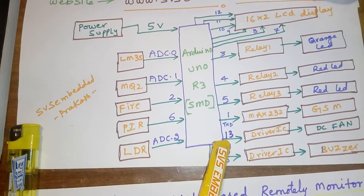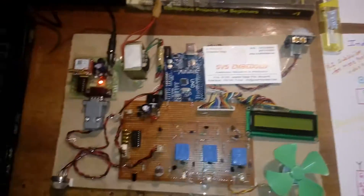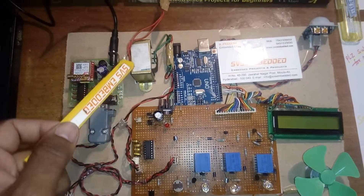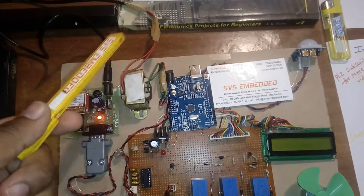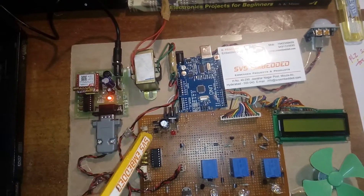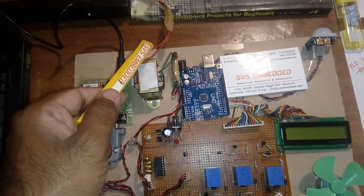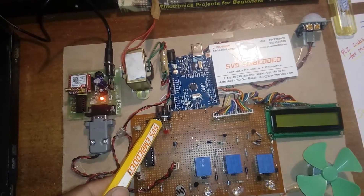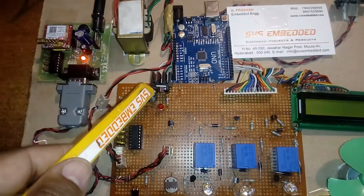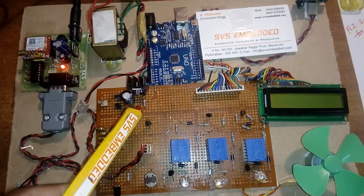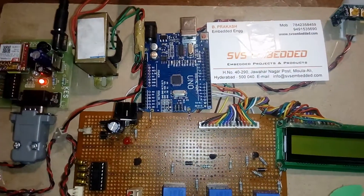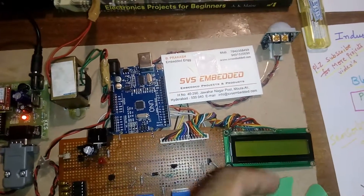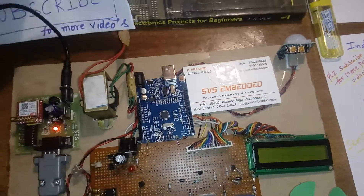Now for the hardware part: I am using a transformer power source or you can use an adapter. The circuit uses a bridge rectifier with 230V AC input, 9V output, a filter capacitor, a 7805 voltage regulator, and an LED indicator. The main board is an Arduino UNO R3 with a 16x2 LCD character display.